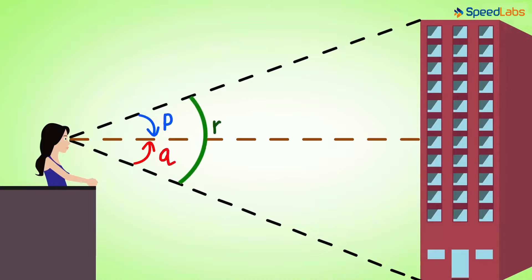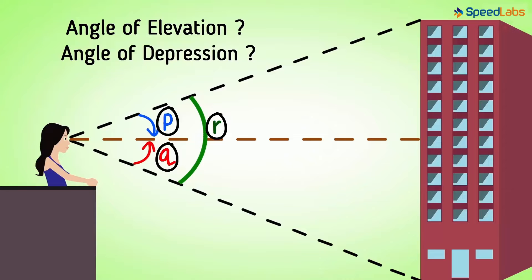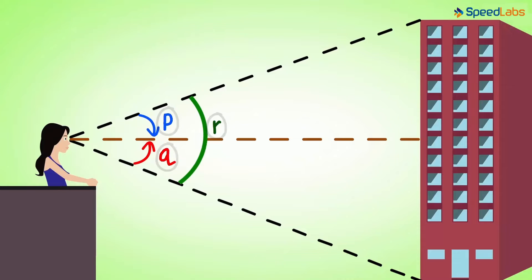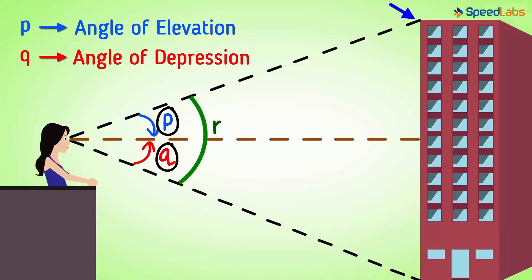Let us denote the angles that we see using some letters. Now here is the question for you to answer: which among these is the angle of elevation and which is the angle of depression? Pause the video and try to find the answer. The angle of elevation is P, formed when she is looking up, and the angle of depression is Q, formed when she is looking down.